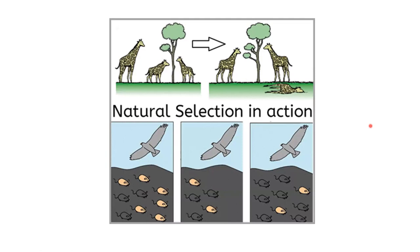Looking at natural selection in action — with giraffes and their neck length — we see that the giraffe with the longer neck faces less competition for resources and can reach leaves on trees. As we move forward in generations, the taller giraffe reproduces more often. We see fewer shorter-neck giraffes, and ultimately the shorter-neck giraffes die out, leaving only the longer-neck ones.